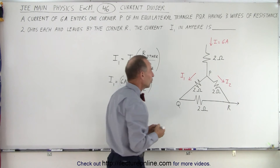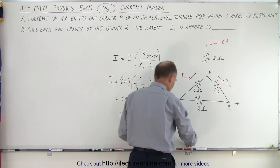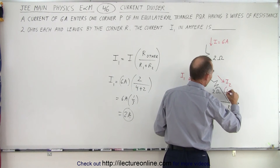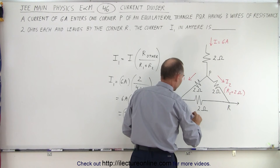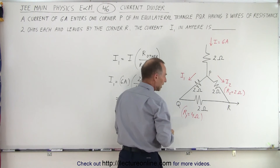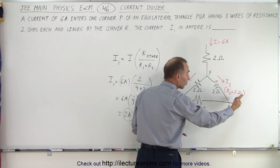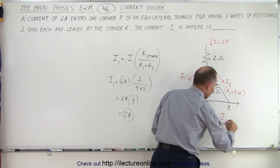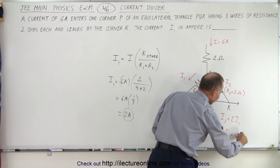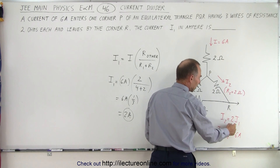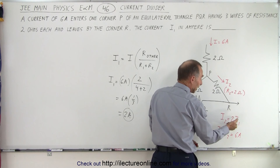Another way to think about it is this: we have 6 amps of current, and part goes through one branch and the other part goes through the other branch. This branch has R2 equal to 2 ohms, and R1 has a resistance of 4 ohms. So if this branch has half the resistance of the other branch, it should have twice the current. We can say I2 is equal to 2 times I1, and I1 plus I2 adds up to 6 amps. So I2 is 4 amps and I1 is 2 amps.